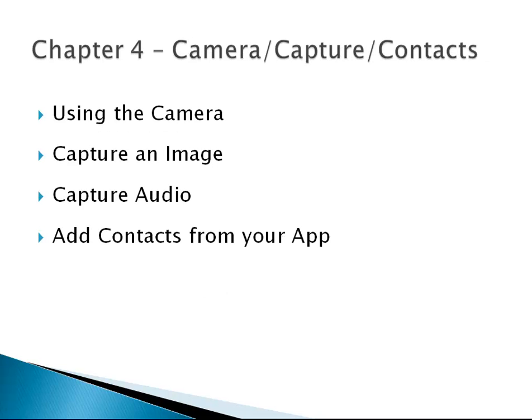In Chapter 4, we'll look at camera, capture, and contacts — three of the PhoneGap APIs. We can use the camera API to either take a picture and use it in our app, or grab a picture that's already on the device. With the capture API, we can capture images and audio. Then we'll deal with contacts — we'll be able to add a contact to our device using our app.